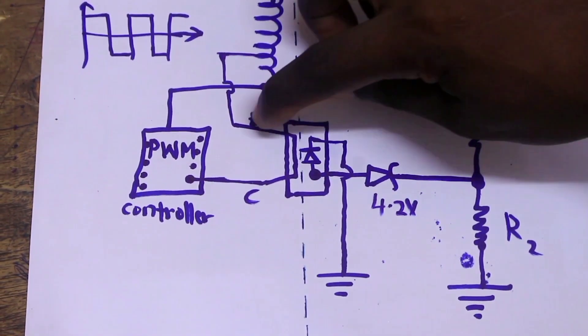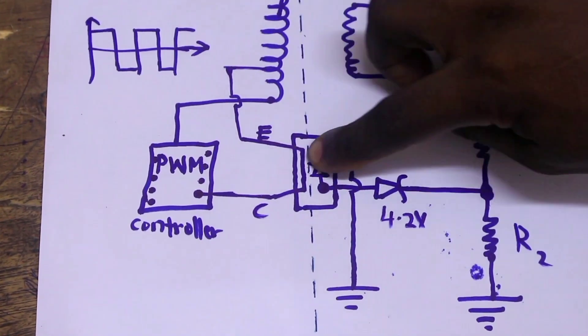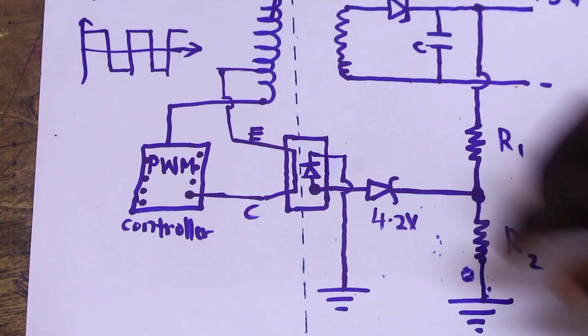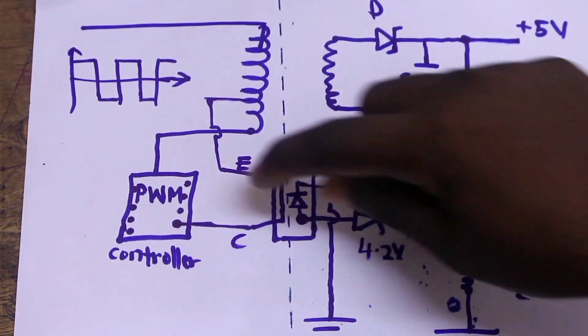So, the phototransistor will close when this diode lights. When the phototransistor closes, the PWM controller will sense that signal, and hence, adjust the duty cycle.